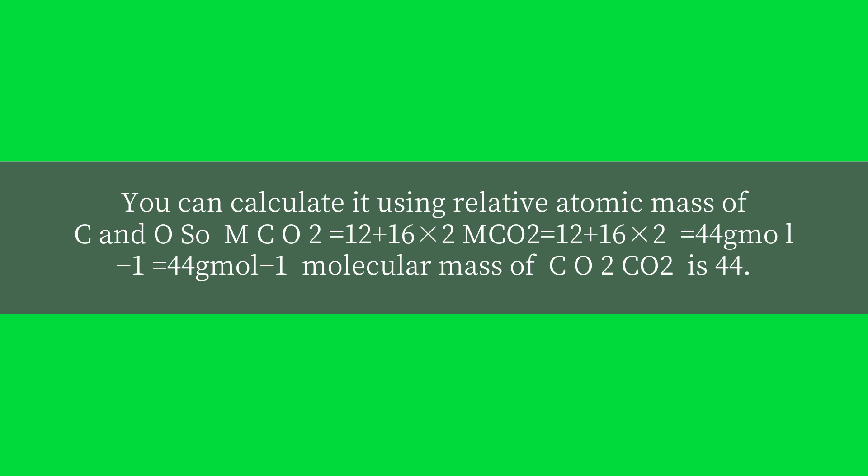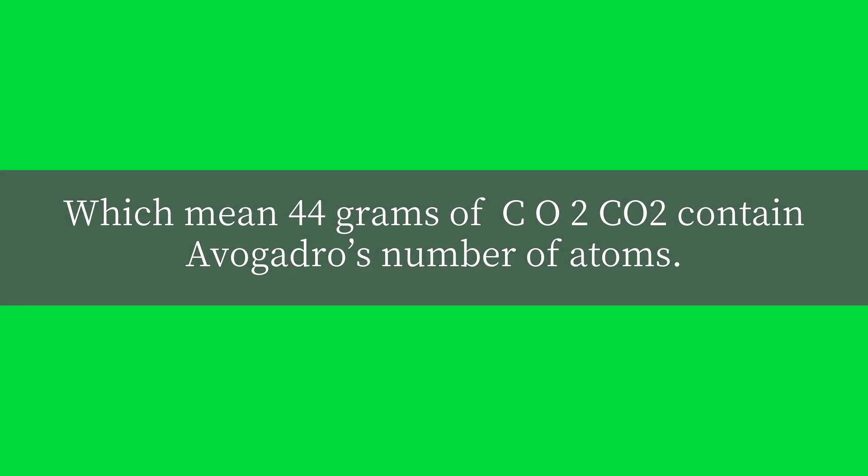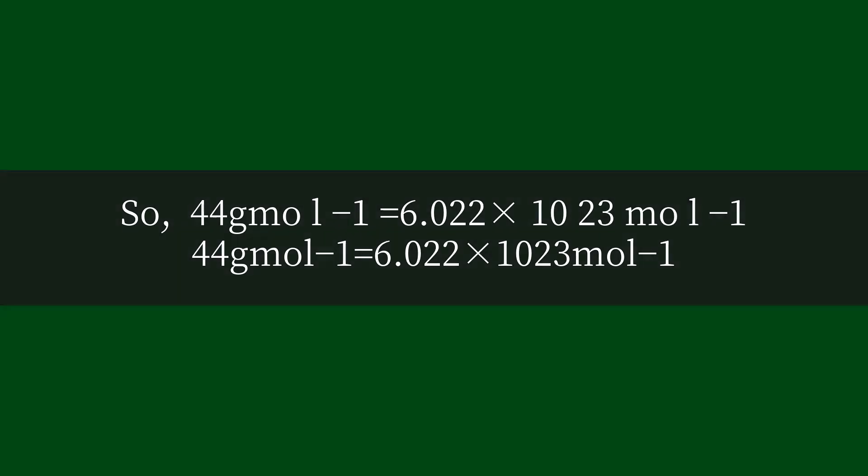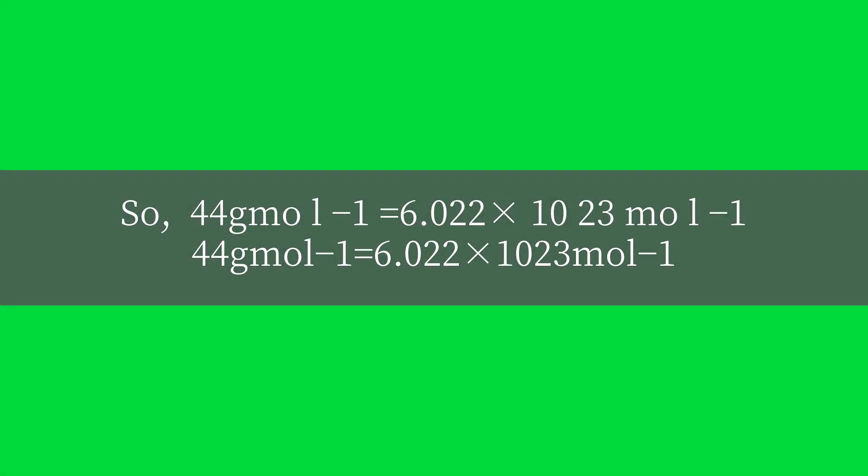Which means 44 gmol−1 equals 6.022 times 10²³ mol−1, using Avogadro's number.